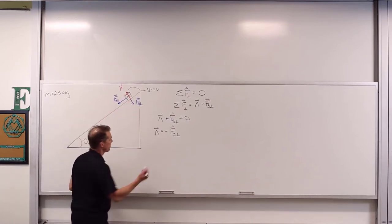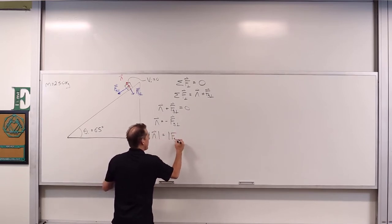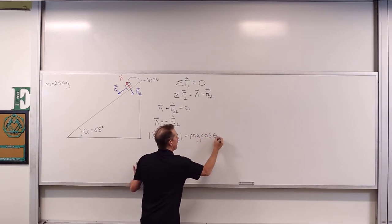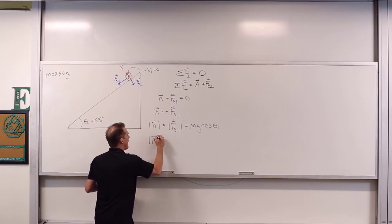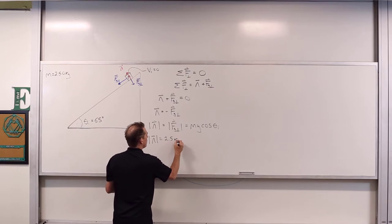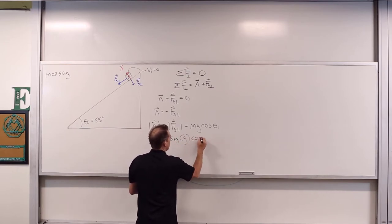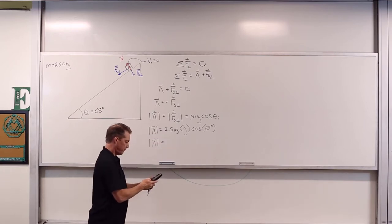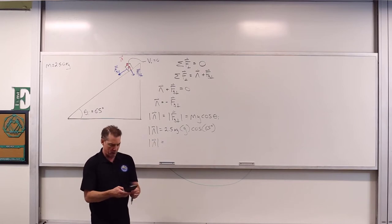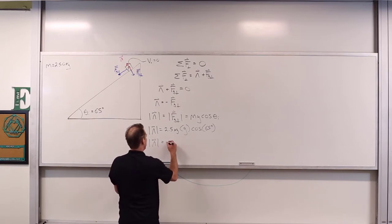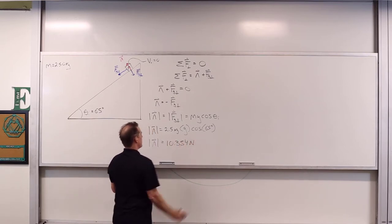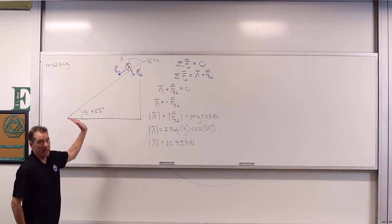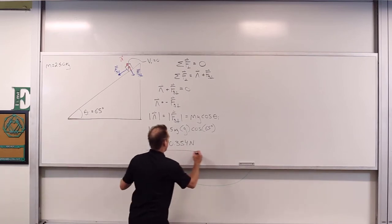Equal magnitudes, opposite directions. We want to know the magnitude of the normal force, which equals the magnitude of the perpendicular component of the gravitational force: mg times cosine of theta sub i. So the magnitude of the normal force equals 2.5 × 9.8 × cos(65°) = 10.354 newtons.